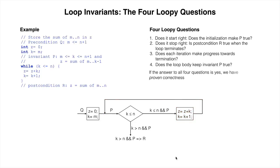For any loop, if the answer to these four loopy questions is yes, then we know the loop with initialization is correct, and we have proven correctness. All loops can be proved correct in this fashion. Given a suitable invariant, we just have to answer these four loopy questions. In the next video, we will show how to check the four loopy questions for this algorithm.